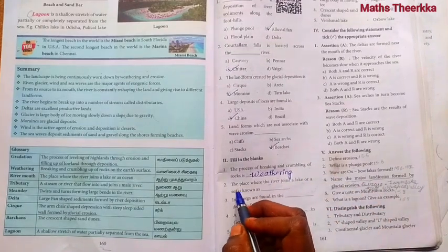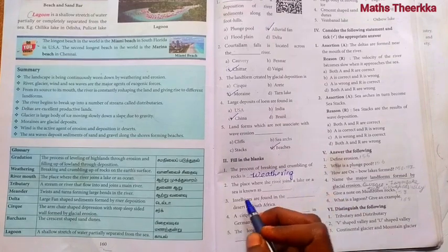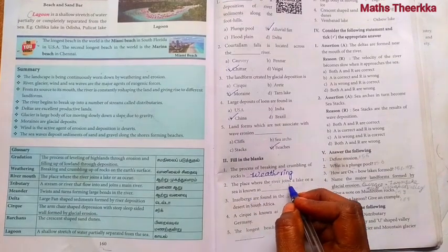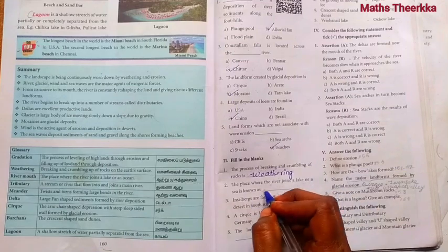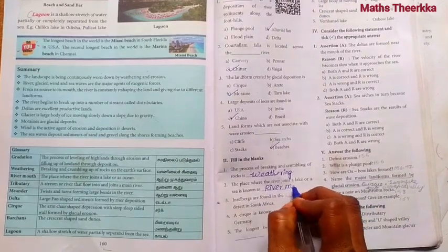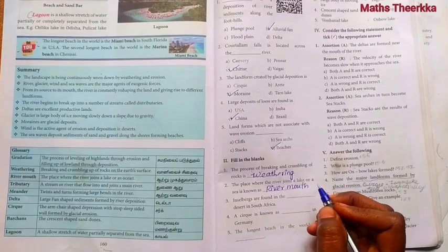Second one, the place where the river joins a lake or a sea is known as river mouth. Third one,